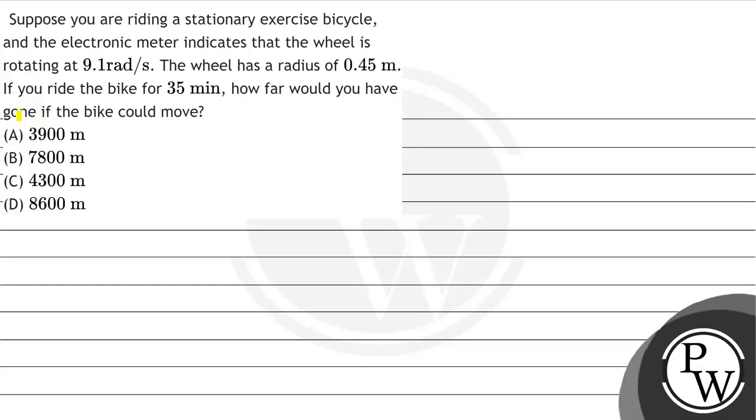Hello guys, let's read the question. The question here is suppose you are riding a stationary exercise bicycle and the electronic meter indicates that the wheel is rotating at 9.1 radians per second. The wheel has a radius of 0.45 meters. If you ride the bike for 35 minutes, how far would you have gone if the bike could move?